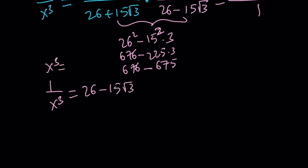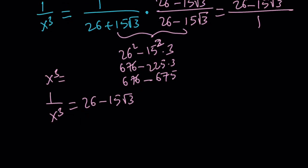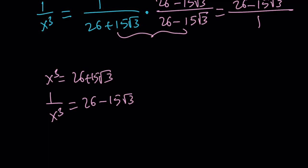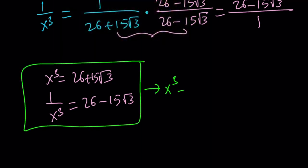And x cubed is 26 plus 15 root 3. So I'm going to go ahead and erase this part to make it less confusing. Now, what do we have? We have these two things. We're going to go ahead and add them.